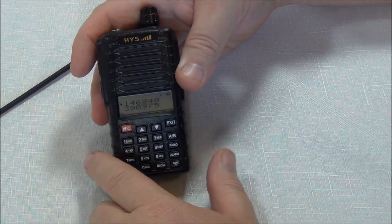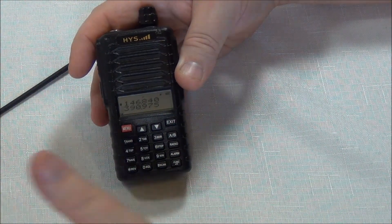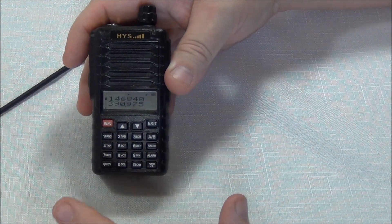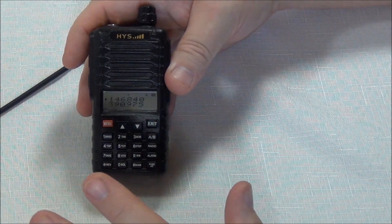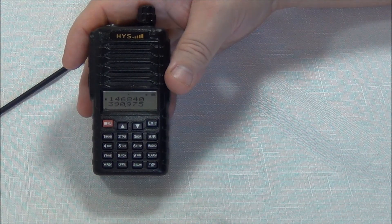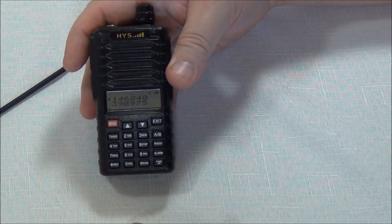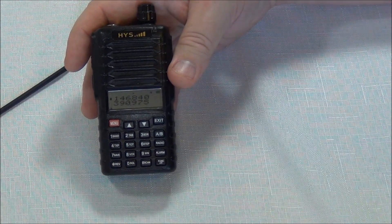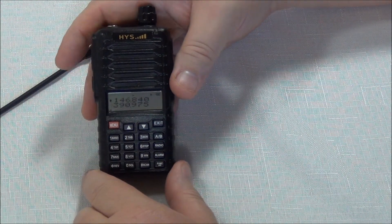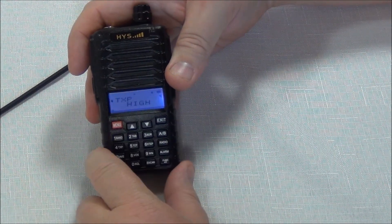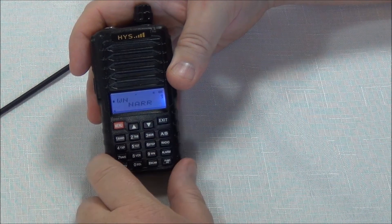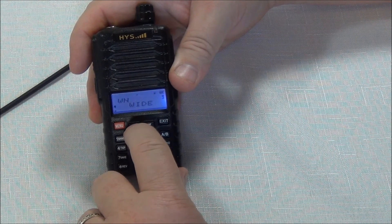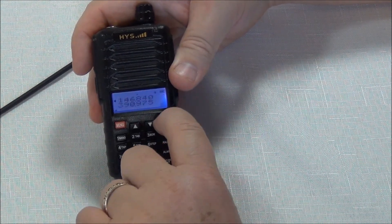Now the next thing we want to do is set the bandwidth. Now as far as I know all the repeaters in the United States are currently running narrow band. There may be a few out there that are wide and you'll have to talk to maybe the local folks in your area to see if you have any trouble with narrow that you might want to change to wide. That's controlled on menu option number nine. So we go menu 9 and you can see we're at narrow now. Menu to change and my options are wide and narrow. Save narrow, exit.